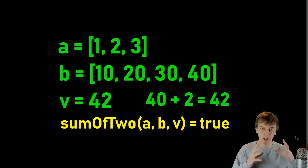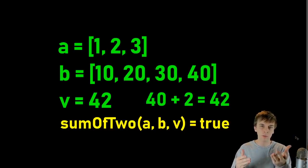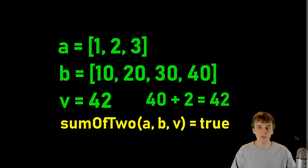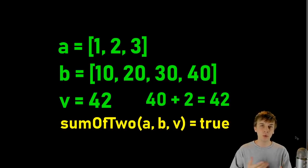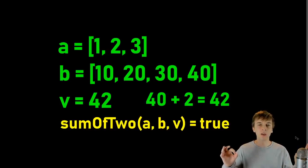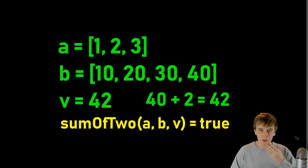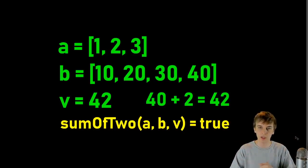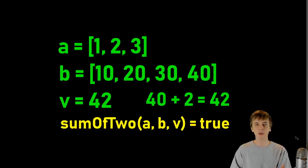So arrays of numbers. For example, A could be an array of one, two, three; B can be an array of 10, 20, 30, 40; and then we also have this value V, which could be 42. We want to return true or false — it's a Boolean method — depending on whether we can pick a number from A and a number from B so they add together to equal V. If we take 40 from B and two from A and add them, we get 42, which is V. So in this case we return true.